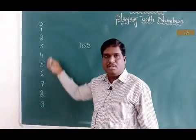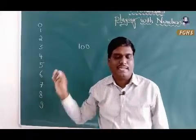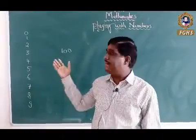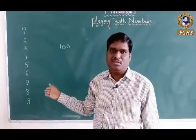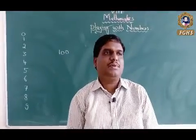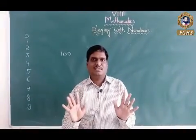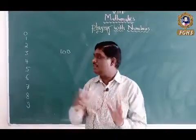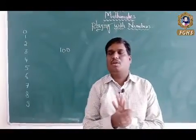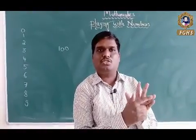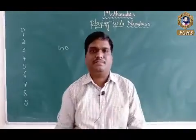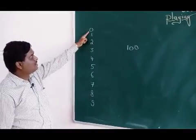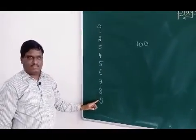This is called the decimal number system. You may be wondering why we use a 10-digit representation. It is very simple — we have 10 fingers, so just because we have 10 figures, we can represent positions with digits. If you look at the board, the numbers from 0 to 9 — there are 10 digits. The first one is 0 and the last one is 9.